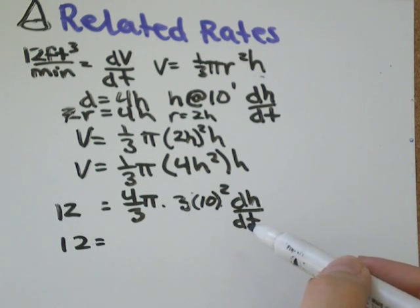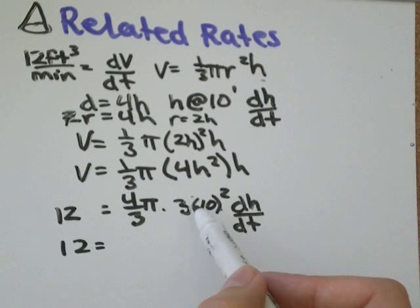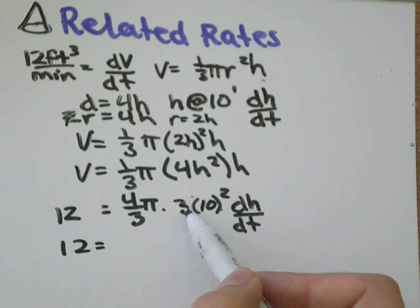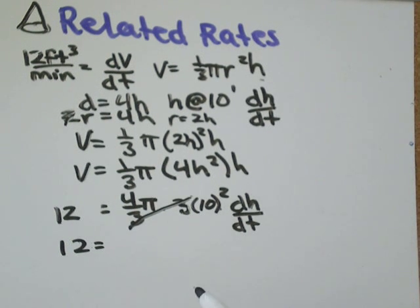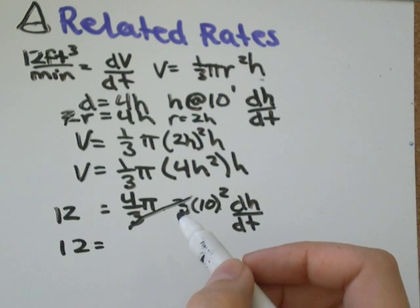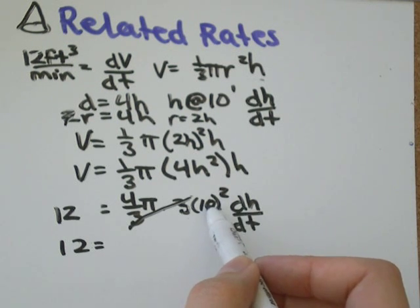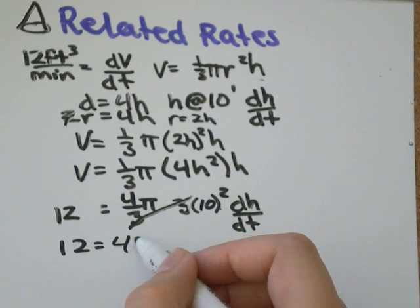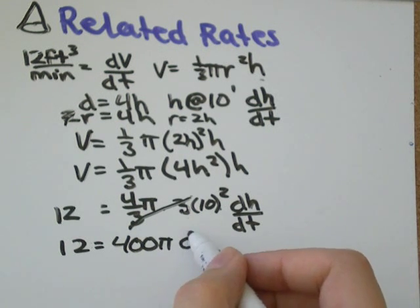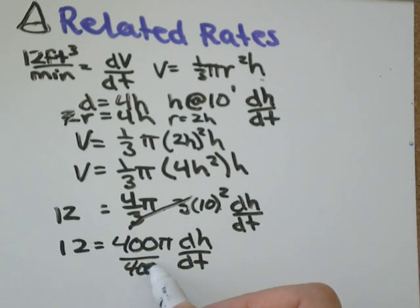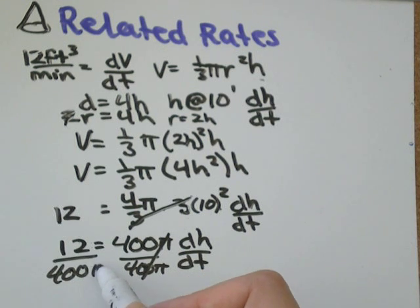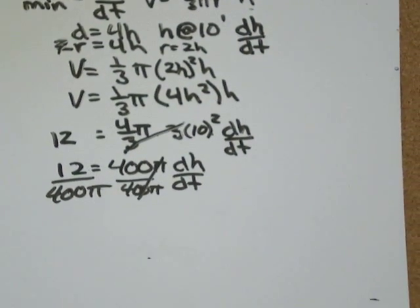So, let's go 10 squared is 100 times 3. Well, we actually don't need to multiply by 3 because those 3's are going to cancel out. So we'll get 10 squared is 100 times 4. It's 400 pi dh dt. So all I need to do is divide both sides by 400 pi. And I'll get dh dt equals 12 divided by 400 pi.